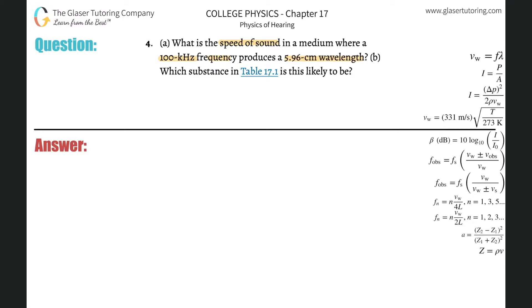So essentially what's the nature of what they're giving us? They're giving us a frequency - I know those units don't look the best - and they're also giving us a wavelength. So we have to somehow relate frequency and wavelength to the speed of sound, because that's what the question's asking.